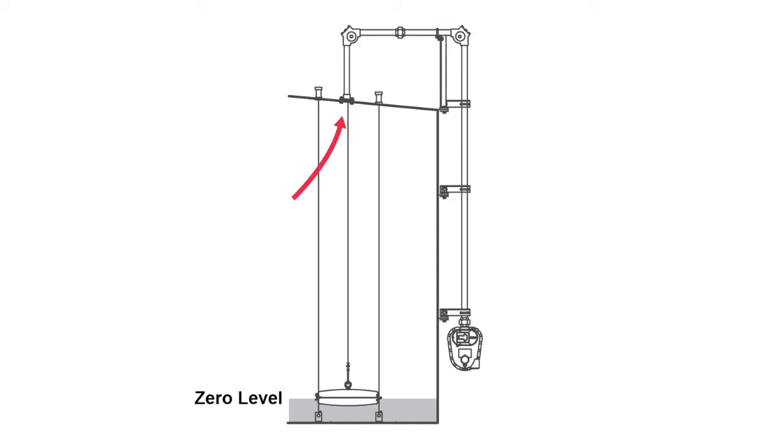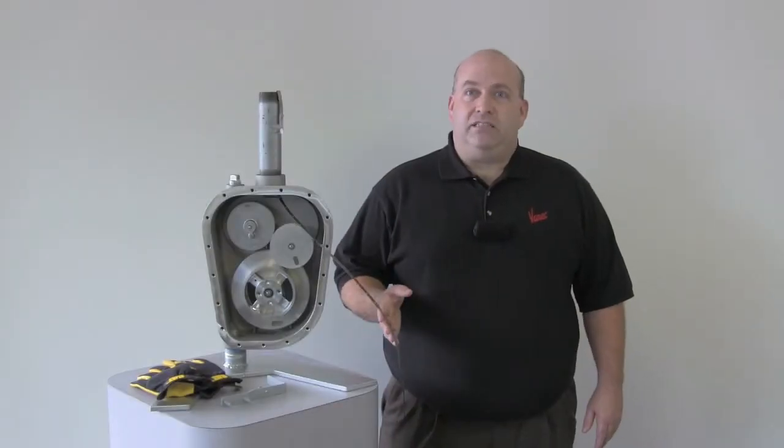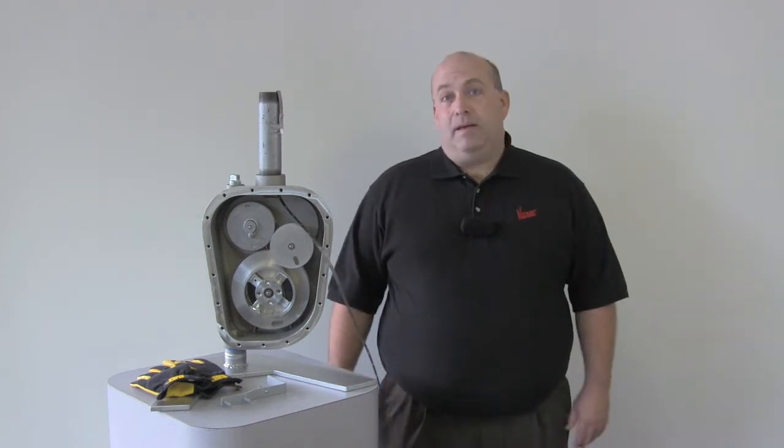We start this procedure with a float at zero level, an empty tank. The tape has been fed through the conduit and the gauge head and it has been cut so that we have about 6 feet of excess tape below the level at which the gauge head will be mounted.